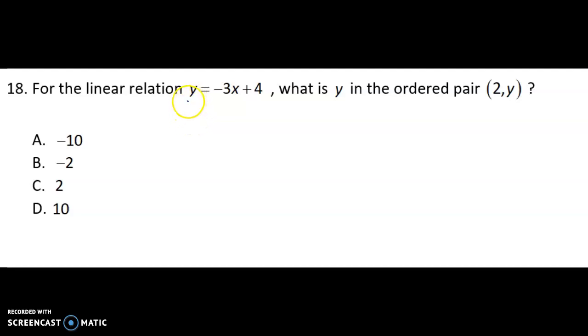In this question, we're given a linear relation of y equals negative 3x plus 4. And we want to know what the value of y would be in the ordered pair 2 comma y.